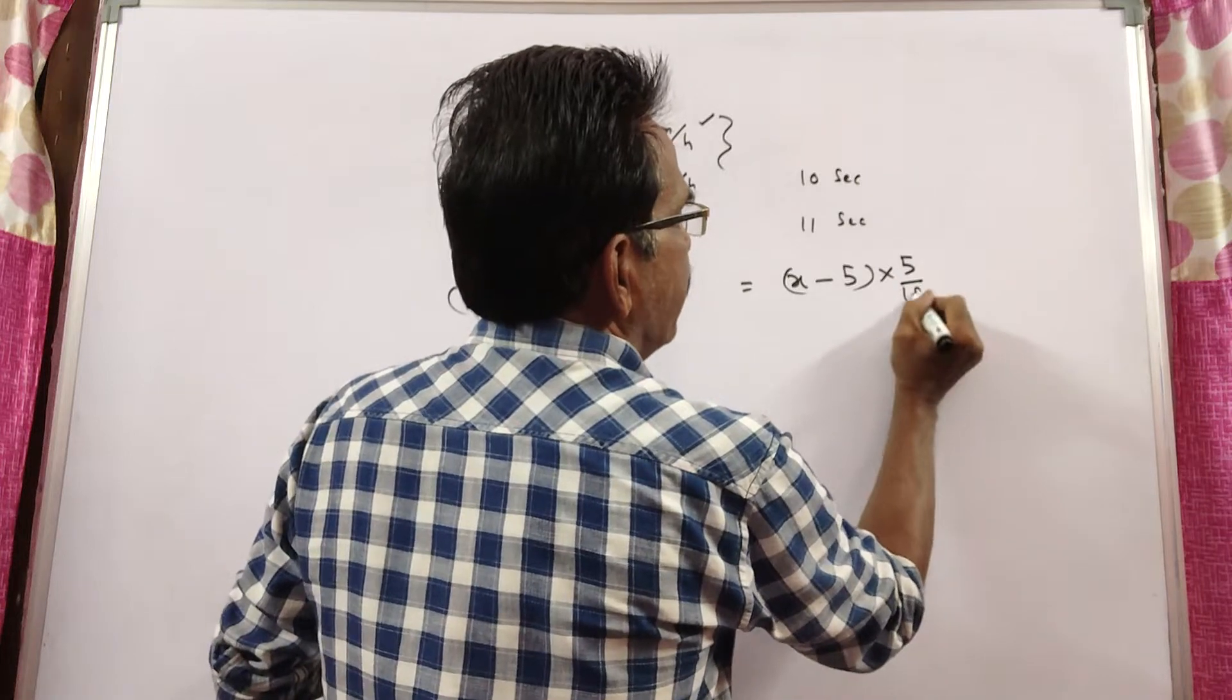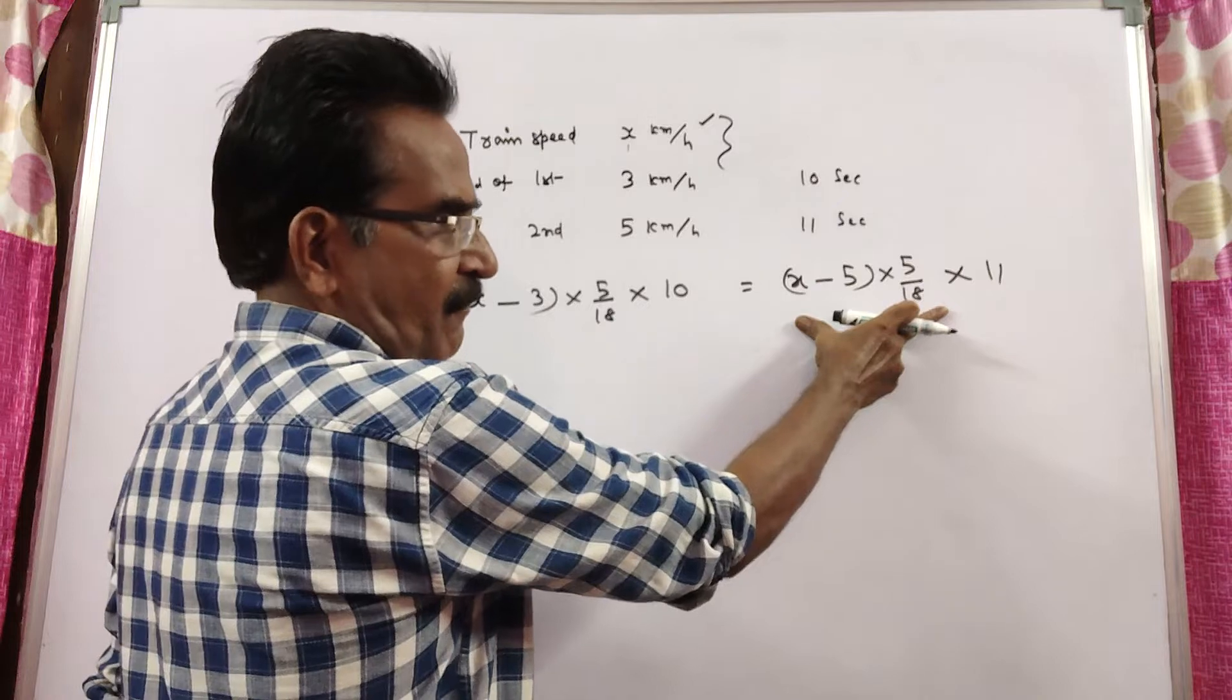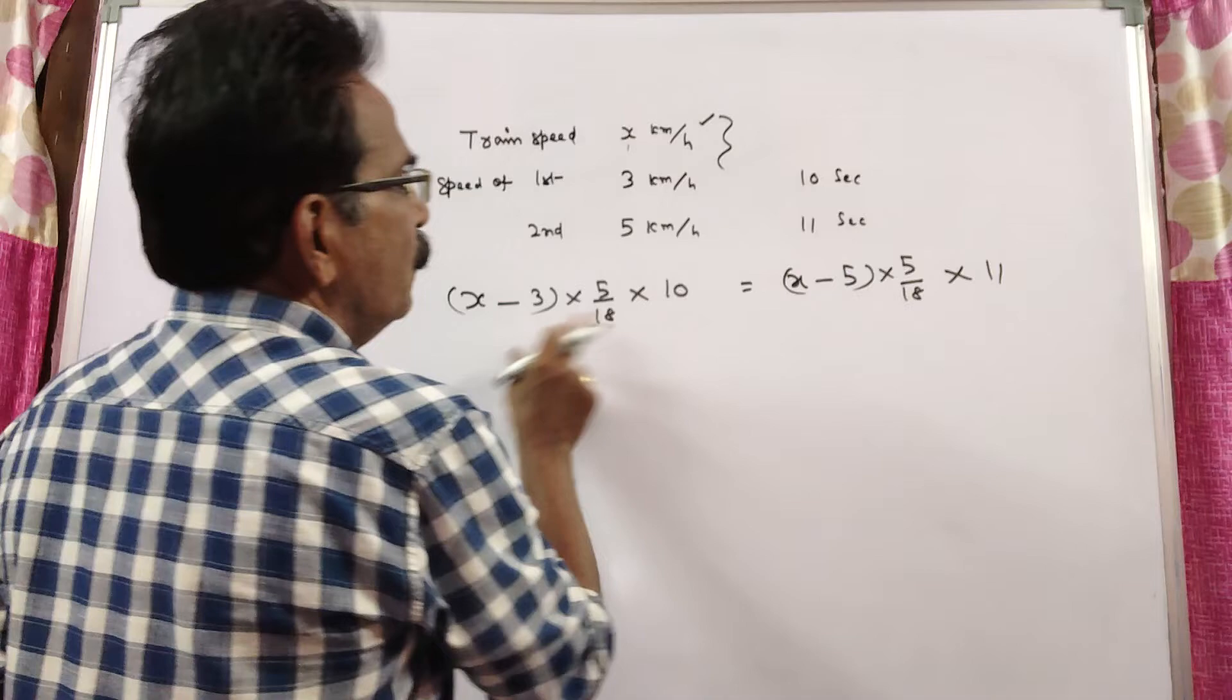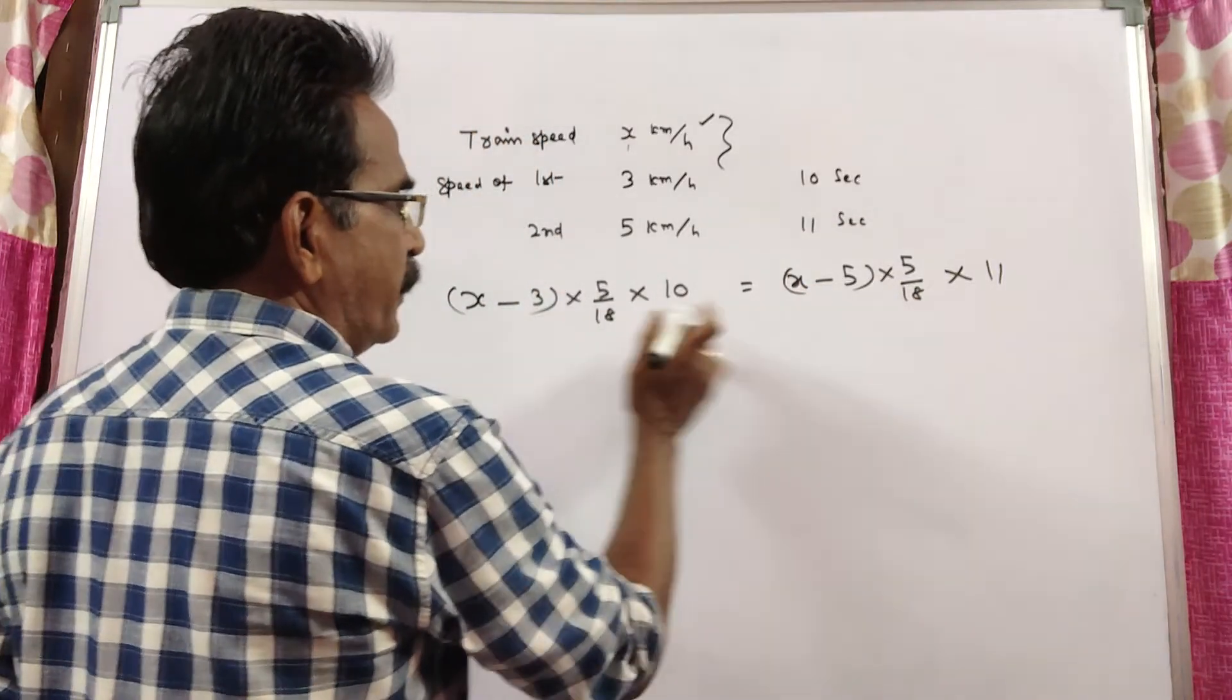Into 11. This is the length of the train, velocity into time, while crossing the second man. This is the length of the train, this is also the length of the train - these two are equal.